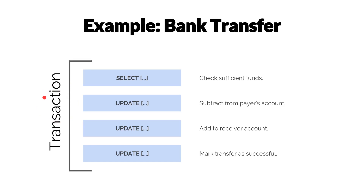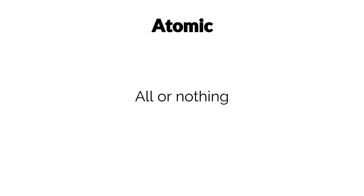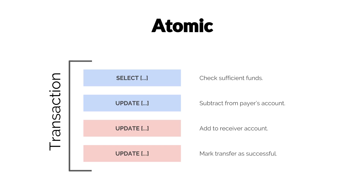Let's go back to the ACID properties in the context of this example, starting with A for atomic. Simply put, atomicity means that either all the queries and operations are run or none of them are. This guarantees that if there is a failure at any point during the transaction, none of the statements are actually committed.